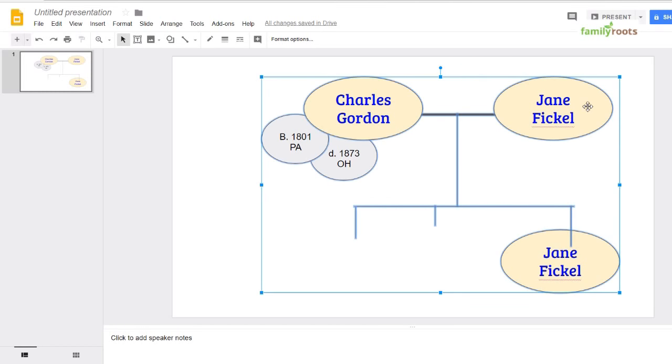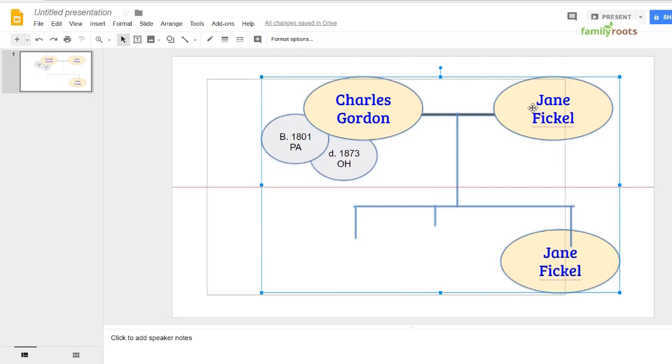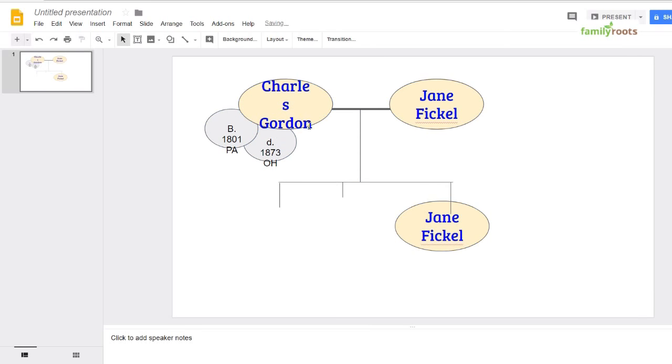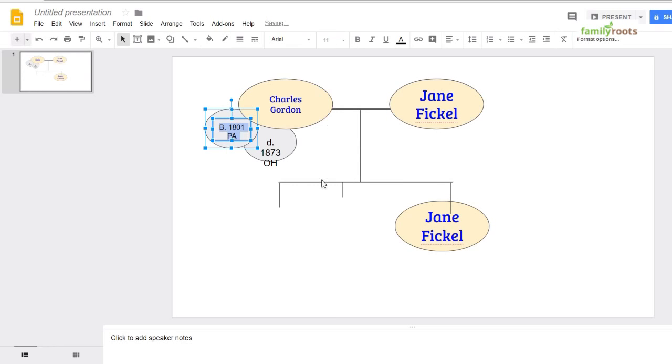Now everything's highlighted, and you can hold down your left mouse key, and you can move things around. Or you can come and see when it changes from a pointer to a diagonal arrow. Now it can make things smaller. Now the font size doesn't change, so you're going to come up here, and have to play with the font sizes a little bit.